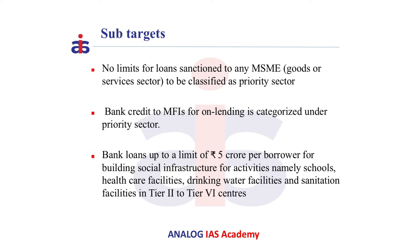There is no limit for loans sanctioned to any MSME, whether for goods or services, to be classified as priority sector. Also, bank credit to micro financial institutions for on-lending is categorized under priority sector. Bank loans up to a limit of 5 crore per borrower for building social infrastructure like schools, healthcare facilities, drinking water, and sanitation facilities in Tier 2 to Tier 6 centers is classified under priority sector.